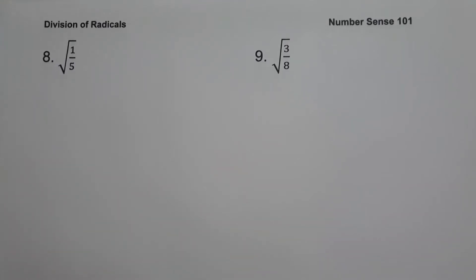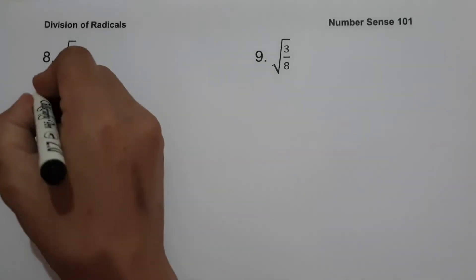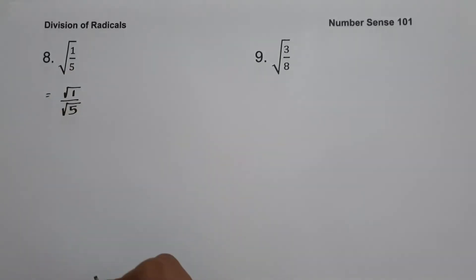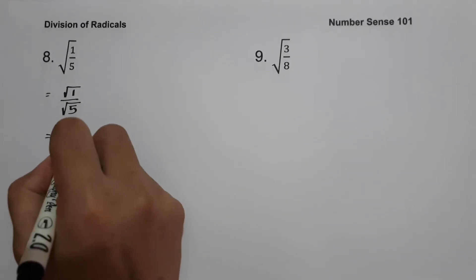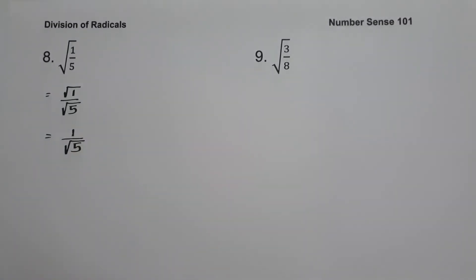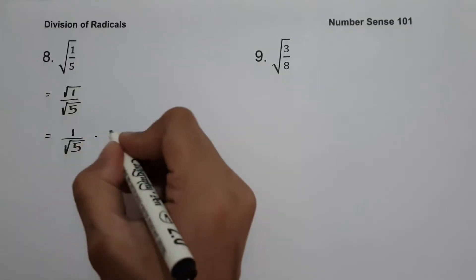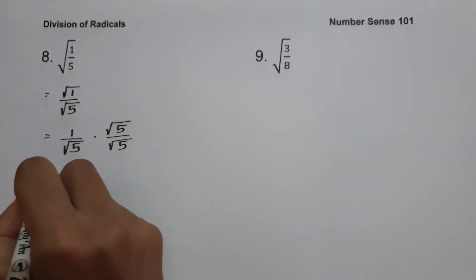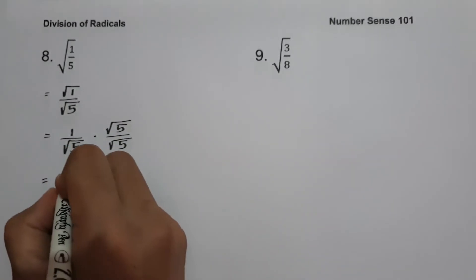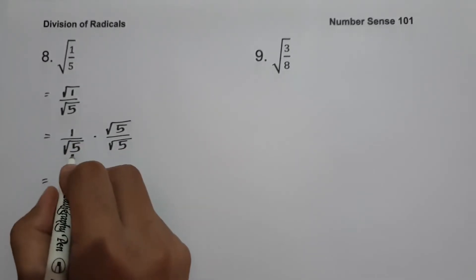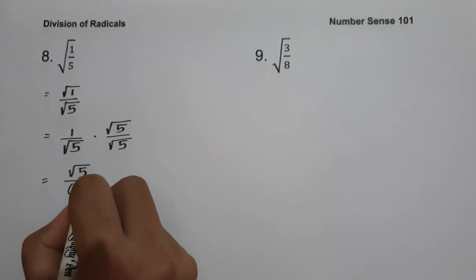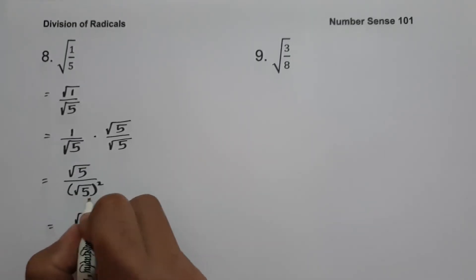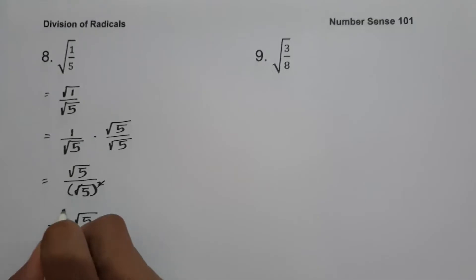On example number eight, we have square root of 1 over 5. We rewrite this as square root of 1 over square root of 5. The square root of 1 is 1, so we have 1 over square root of 5. To eliminate the radical sign in the denominator, we rationalize by multiplying numerator and denominator by square root of 5. This gives square root of 5 over square root of 5 squared, which is 5. The answer is square root of 5 over 5.